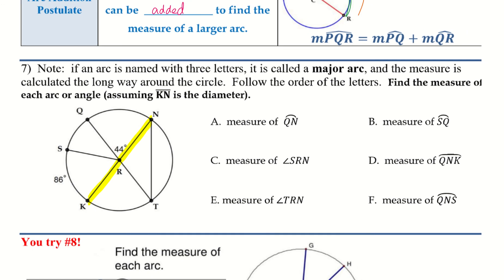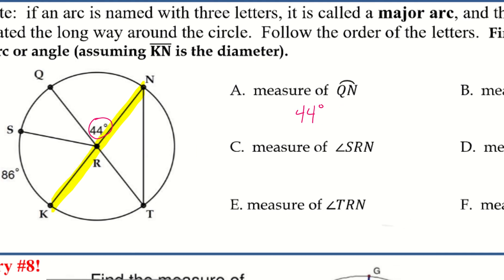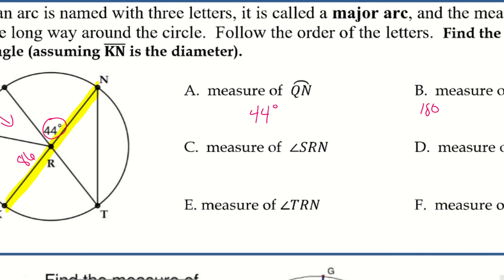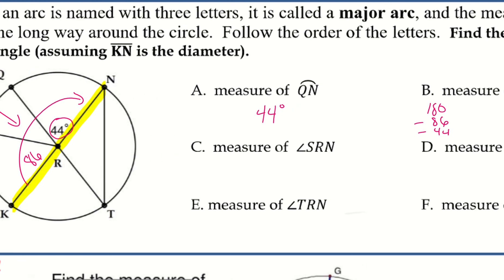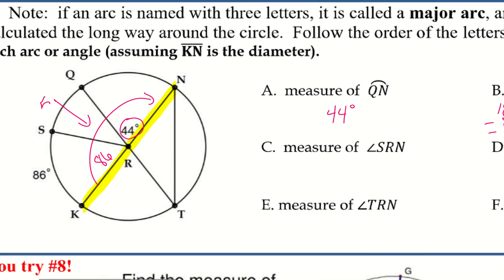Let's start with A: arc QN goes with the 44 degrees, so that is 44 degrees. Next, B is arc SQ — I know this part is 86 degrees. So I take 180 minus 86 minus 44, because the whole semicircle is 180 and I subtract out the other two pieces to get the middle. That gives me 50 degrees.